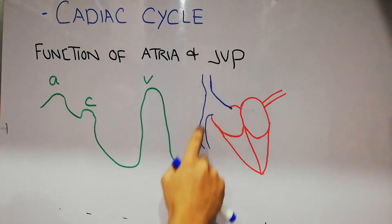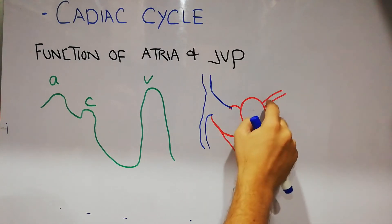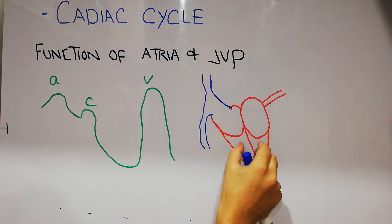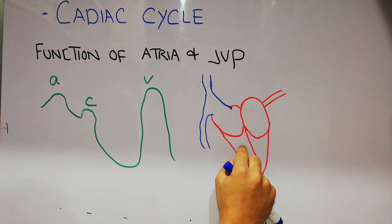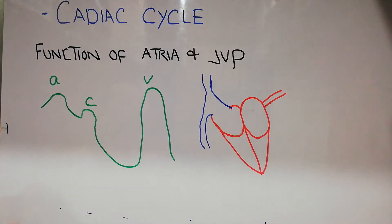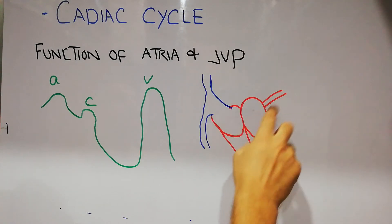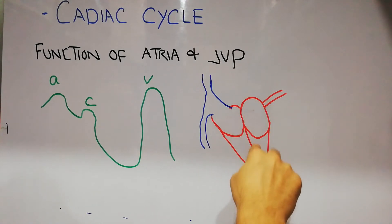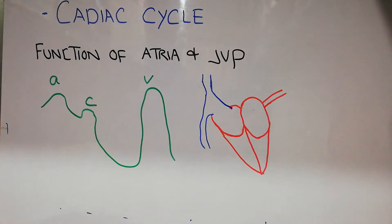Blood comes from the head and the lower body and fills the right atrium, and oxygenated blood comes from the lungs. The atria contract and blood from the atria goes into the ventricles. The right atrium and right ventricle contract during systole, pushing blood into the lungs where it gets oxygenated, then returns to the left atrium, and from the left atrium the blood is pushed into the ventricle and pumped to the whole body during systole.